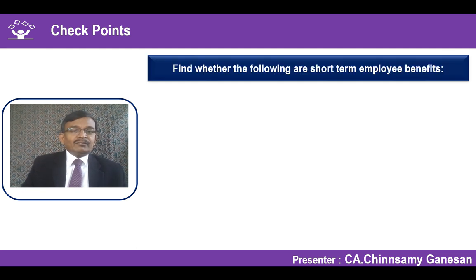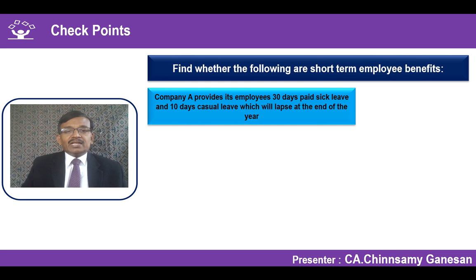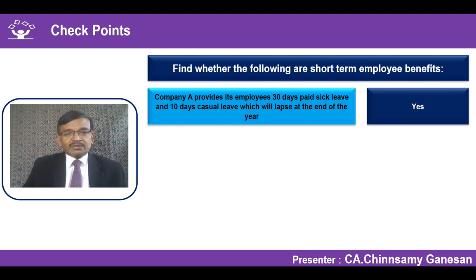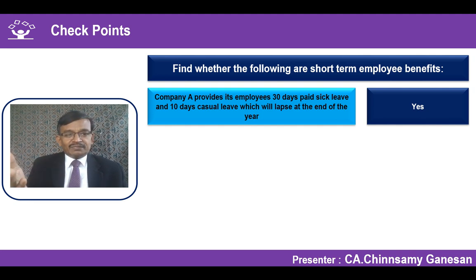Example: A company offers 30 days of sick leave and 10 days of casual leave per year, but unused leave lapses at year end. Even though the leave may lapse, since the employee is entitled to take it and full salary is paid during absence, this is considered a short-term employee benefit. The benefit of providing such leave is accounted for as a short-term employee benefit.